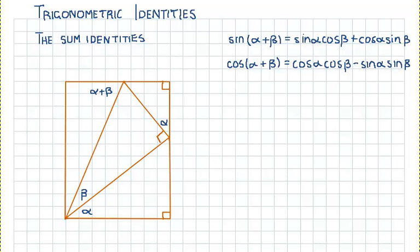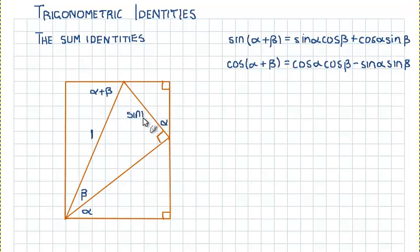We are going to say that this side here is one unit long. Because that side is one unit long and this angle here is beta, the length of the opposite side is sine of beta, and the side adjacent to the hypotenuse has a length of cosine of beta.